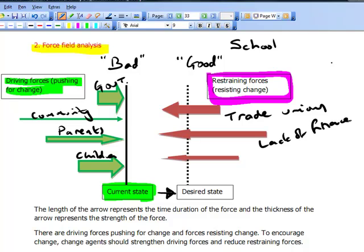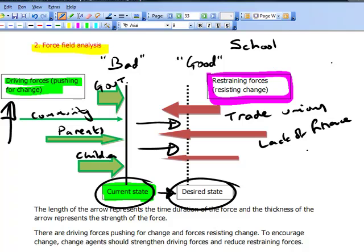So remember, in order to encourage successful change, successful movement, in order to go from the current state to the desired state, we can either increase the driving forces or decrease the restraining forces. So an example of how we could decrease the restraining forces would be, we have an agreement with the trade unions that we will not make teachers redundant for a certain period, and we will offer them free training. That is an example of what we can do to reduce the restraining force from, for example, the trade union.